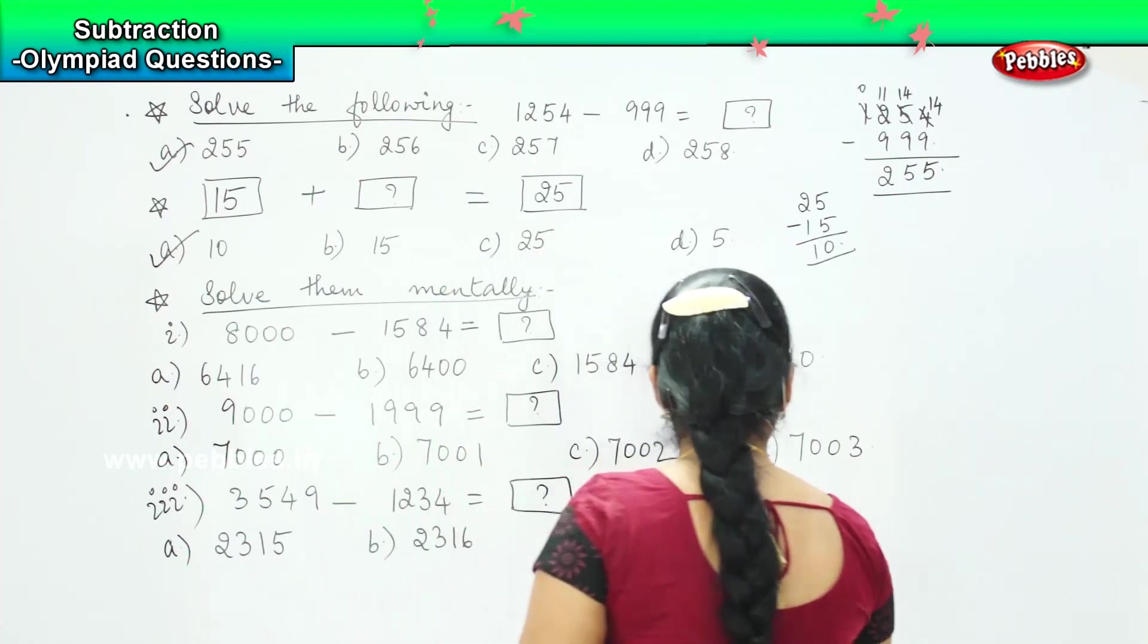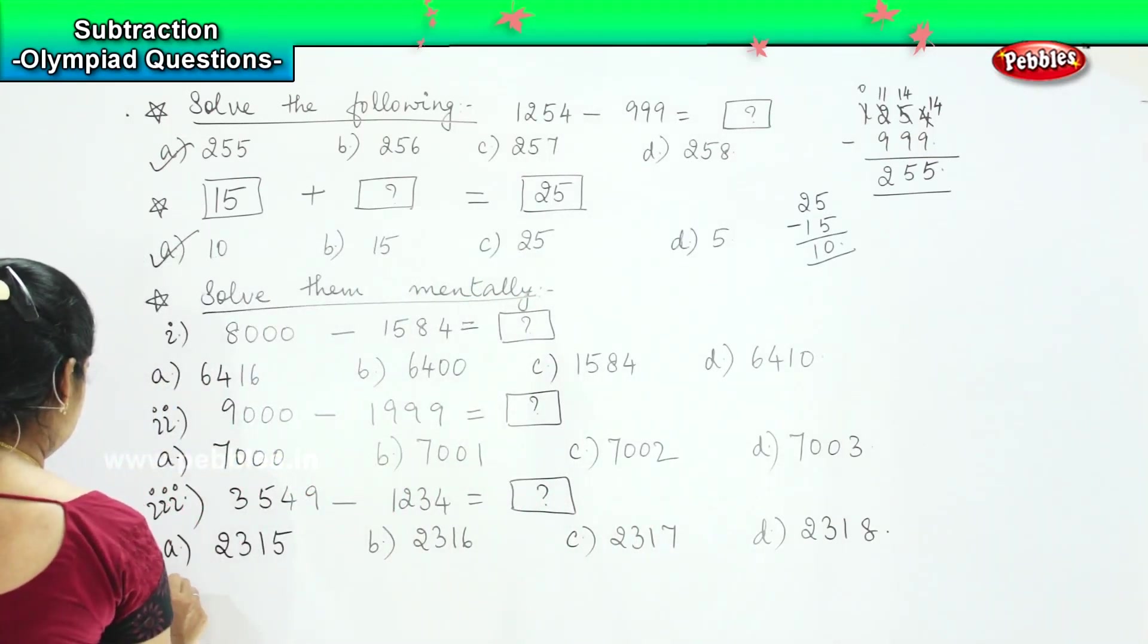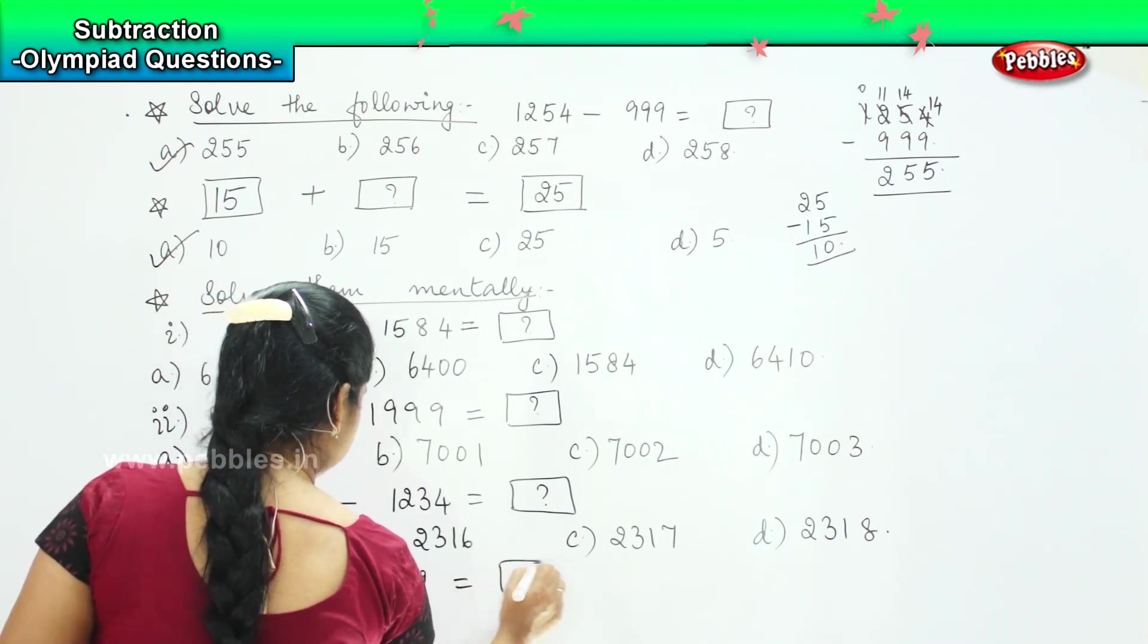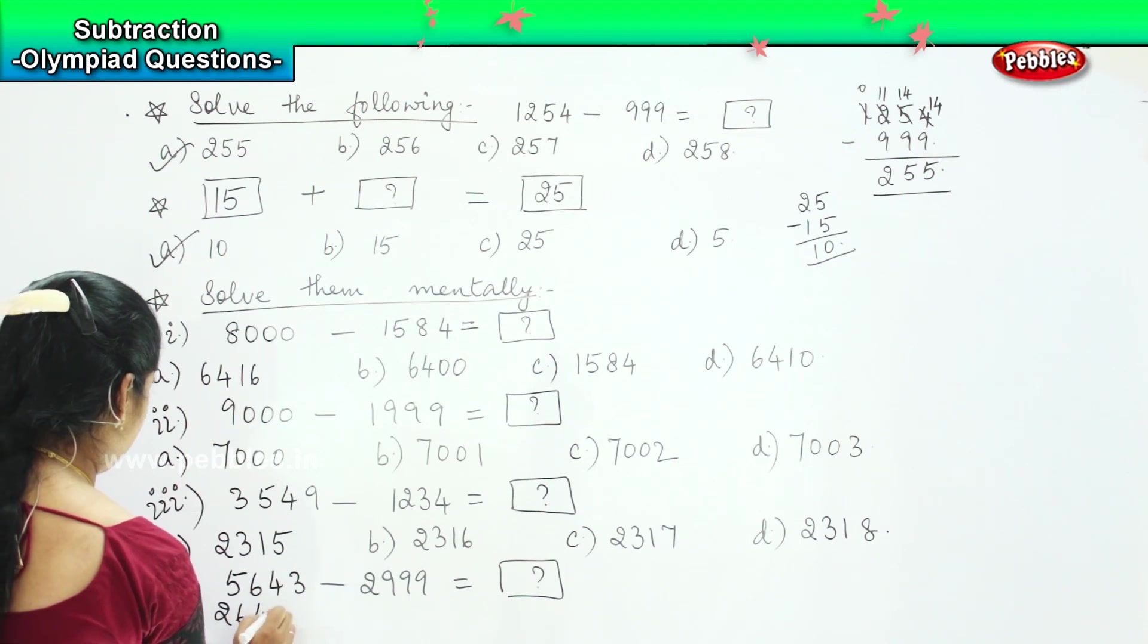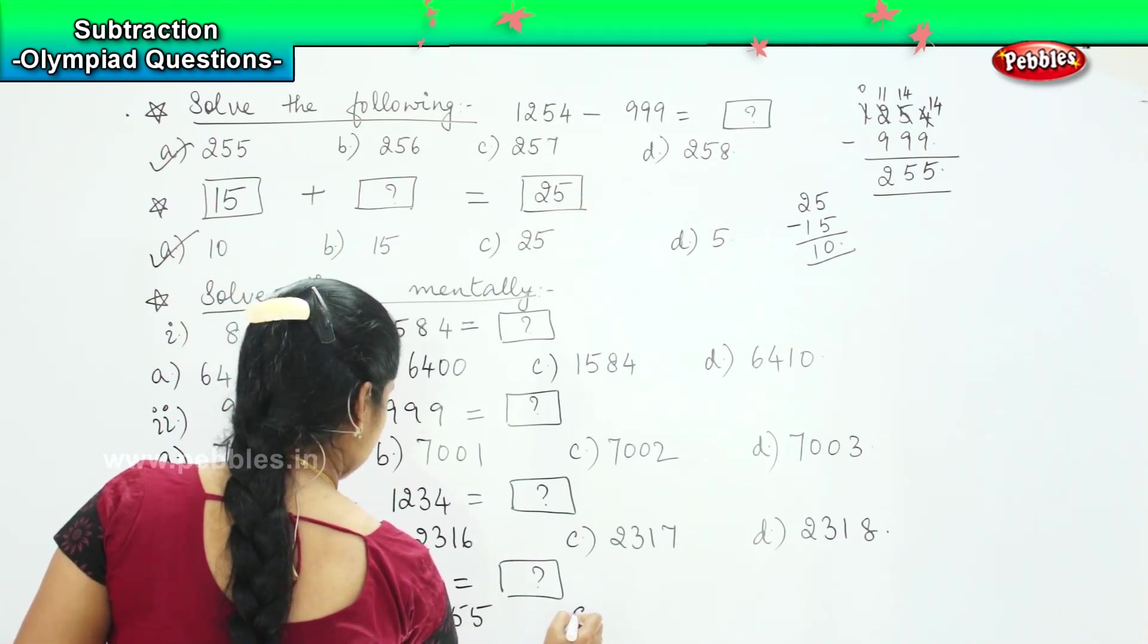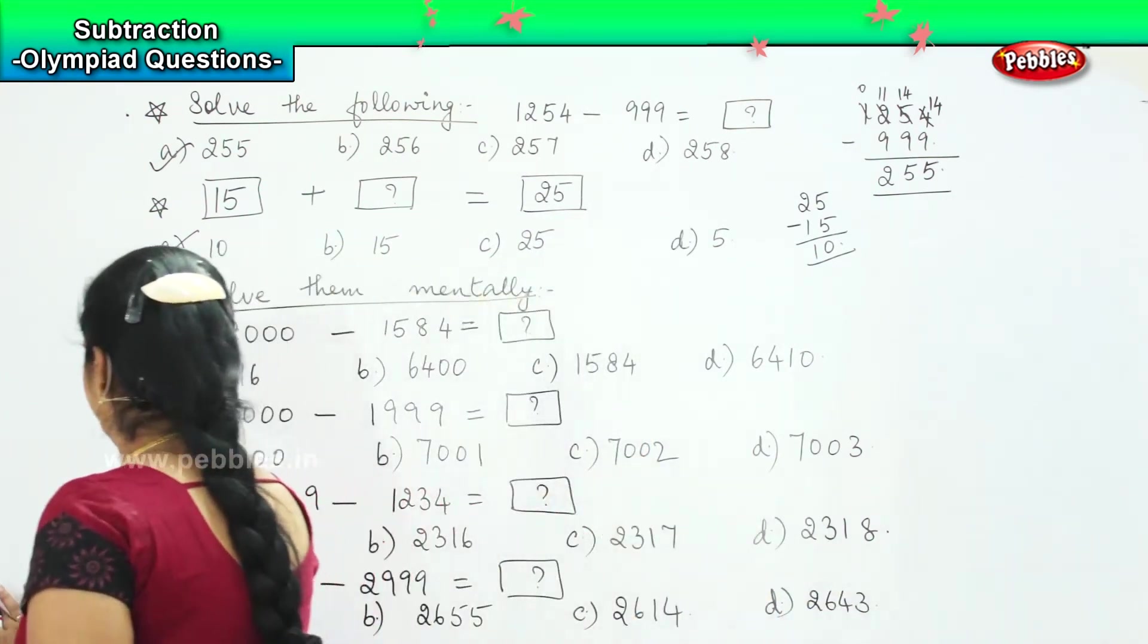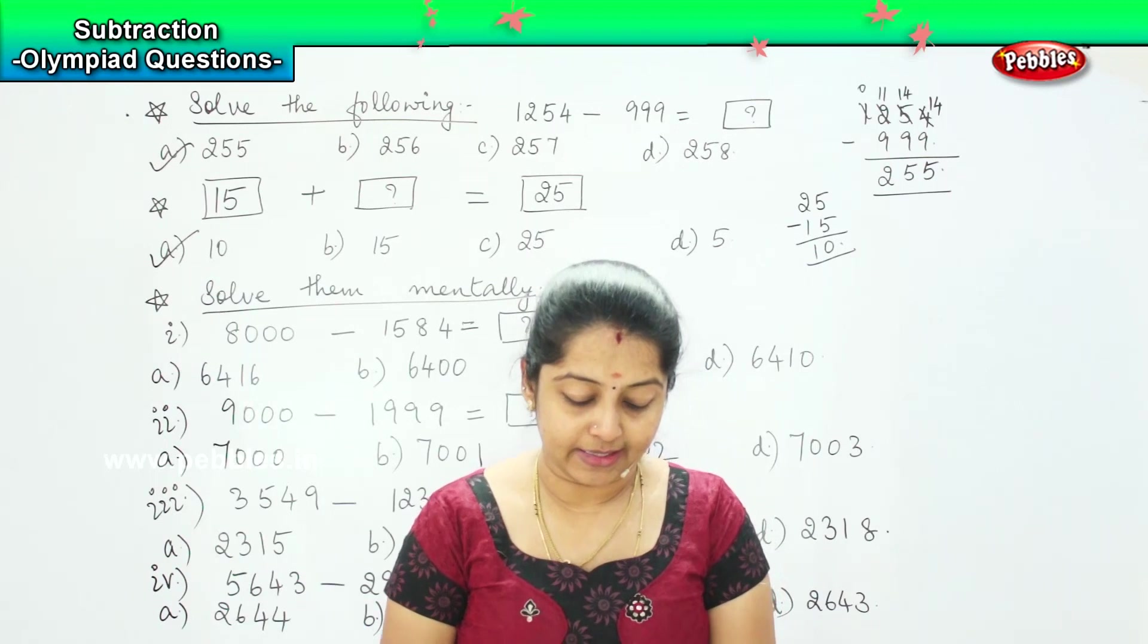and option D 2318. And the fourth one is 5643 minus 2999 is equals to something. Your options are 2644, option B 2655, option C 2614, and option D 2643. So now, we are going to solve these questions mentally one by one.